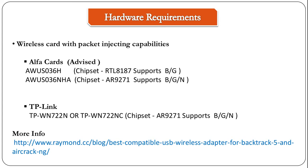The Alpha cards are the most used ones. There are two options. The first is the Alpha AWUS036H, which uses a Realtek RTL8187 chipset. This supports the B/G/N band and is the most used card for wireless hacking — it is very stable and has been around for 3-4 years. The latest one is the Alpha AWUS036NHA, which has an Atheros AR9271 chipset and supports all three bands: B, G, and N.